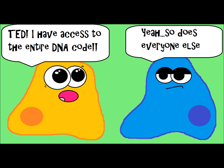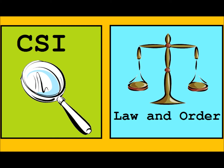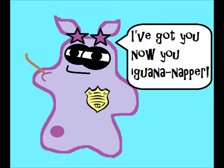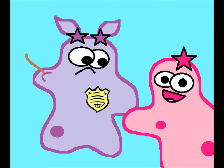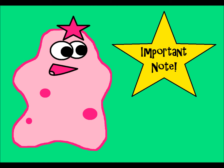One thing that students sometimes don't understand is that all of the cells in your body — every single cell — has your entire DNA code. You know how on shows like CSI or Law and Order, a criminal can leave behind a hair sample or a skin sample or a blood sample, and they can link it to find the criminal? Even leaving behind a hair that has a follicle cell, you can get the entire DNA code.